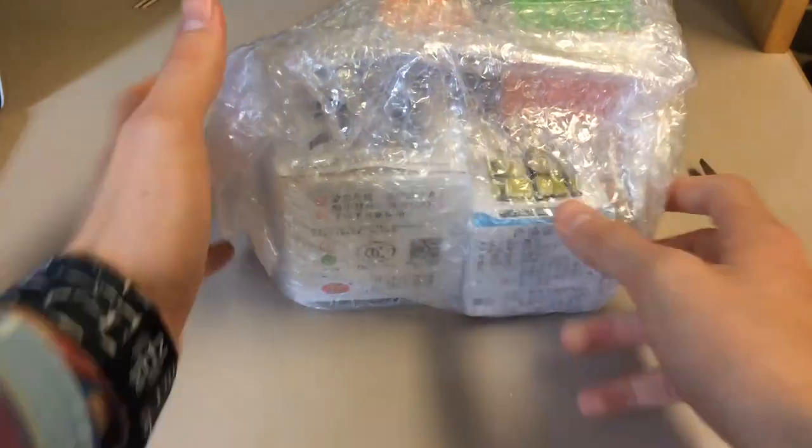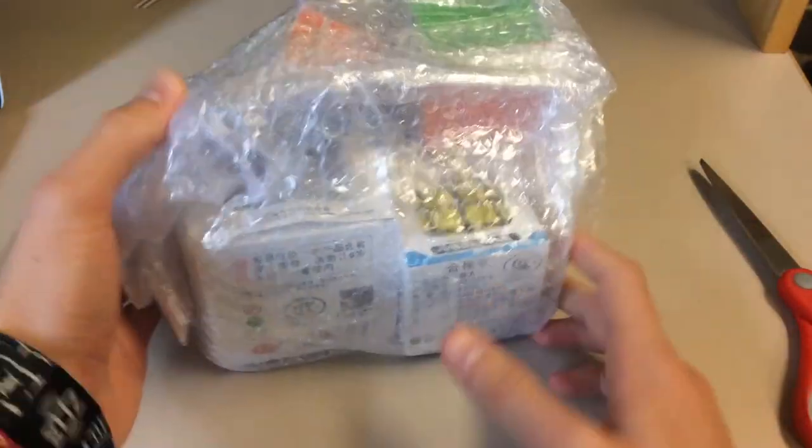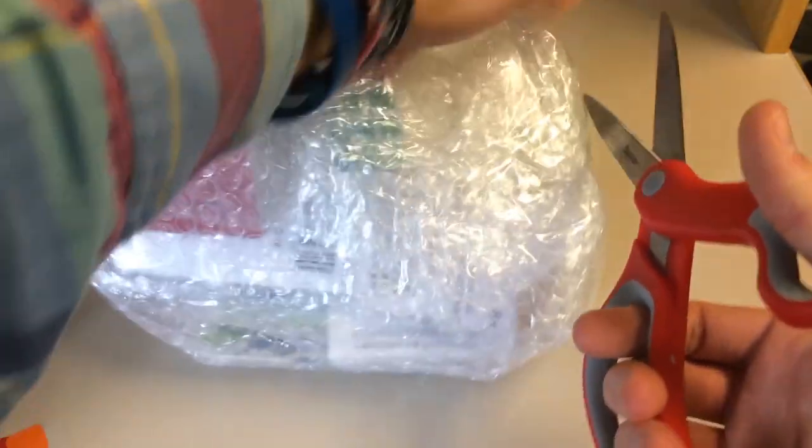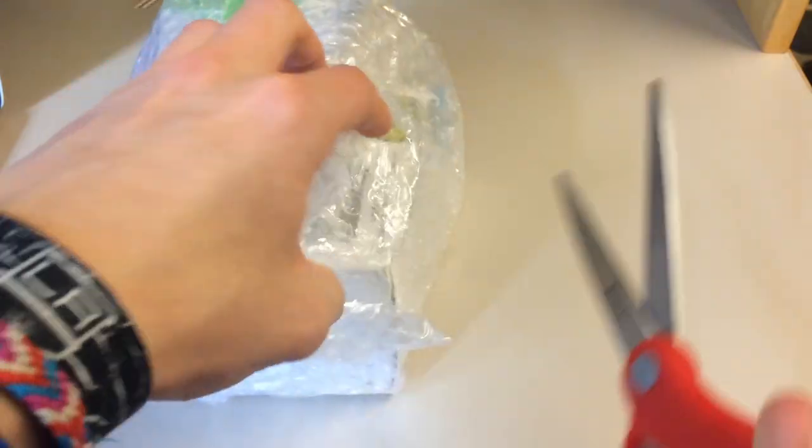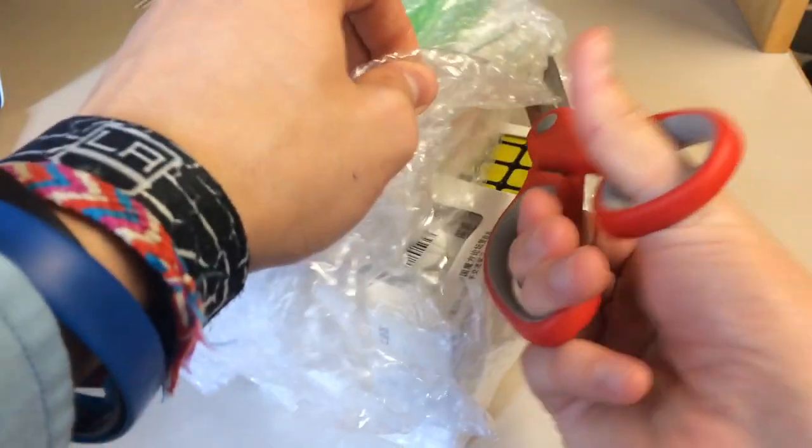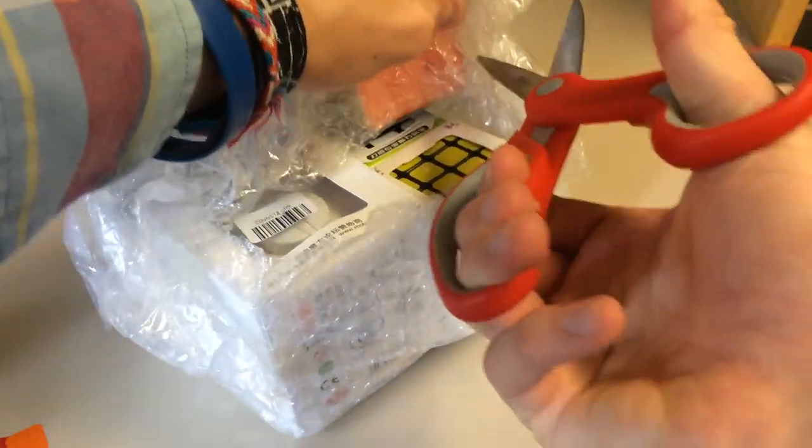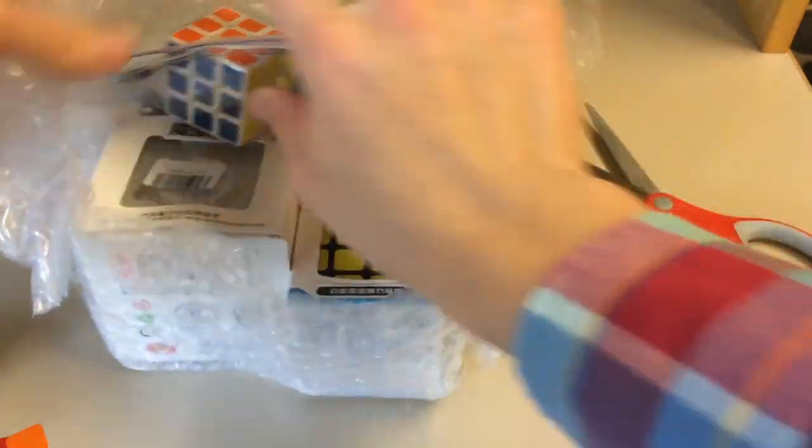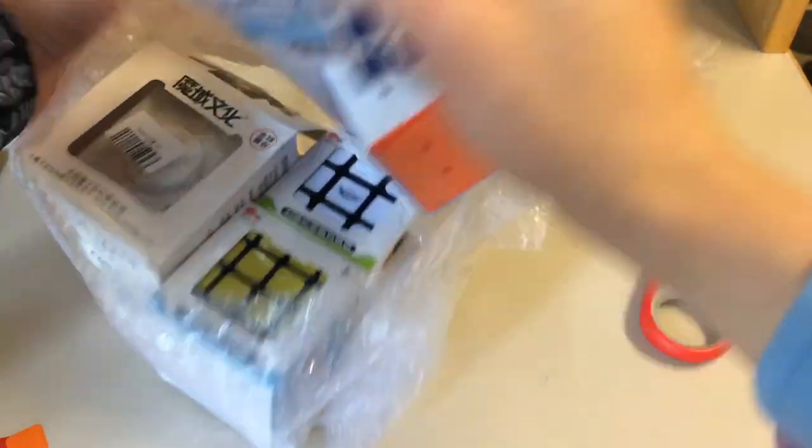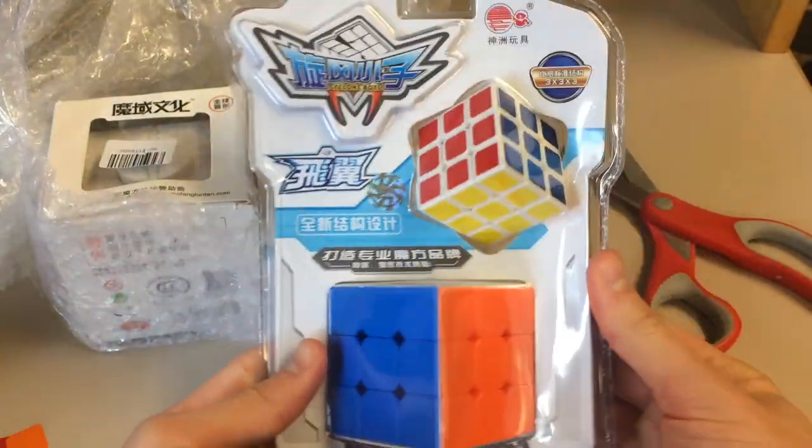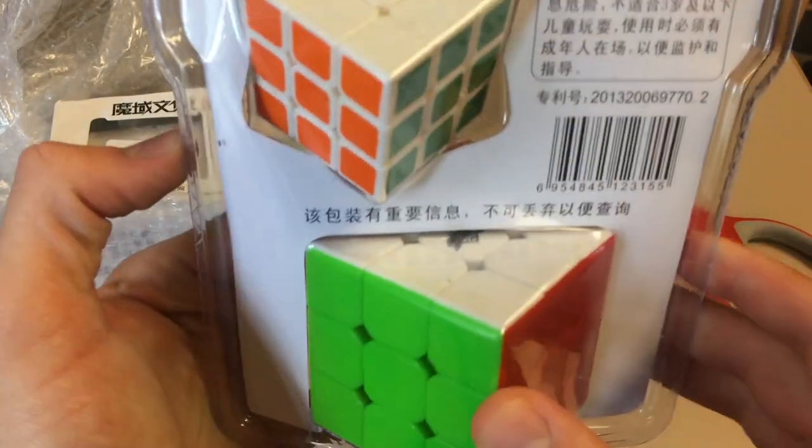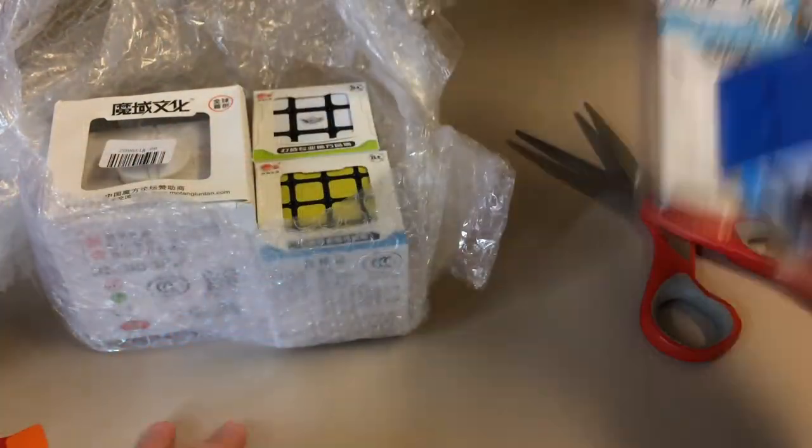LightTake sent me a bunch of cubes. They sent me five... Let's actually see what they sent me. I thought they were going to send me five Cyclone Boys 3x3s. However, this does not seem to be the case. Let's see what they decided to send me. Okay, so here we have two cubes in one. I have no clue what this says.